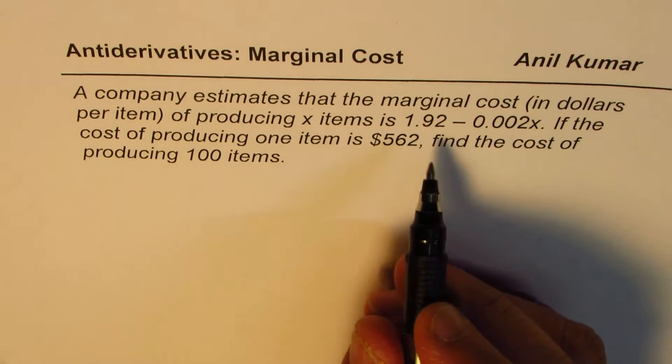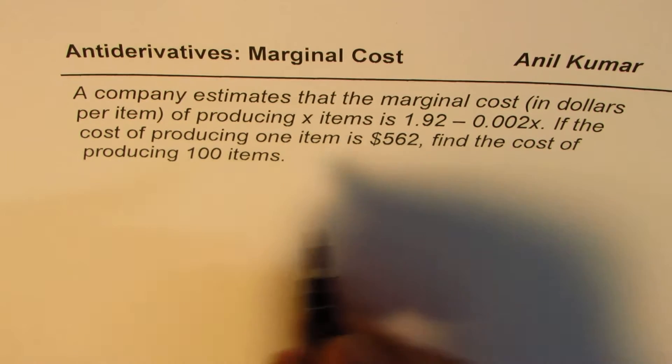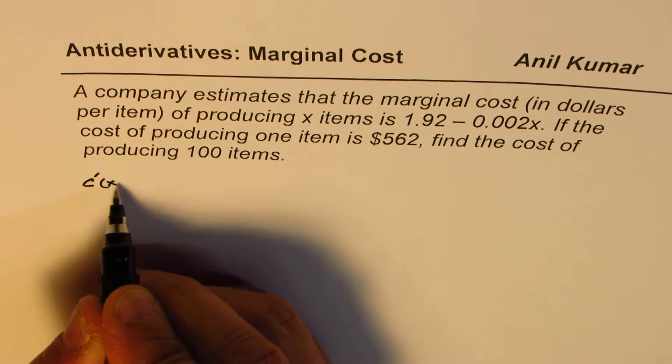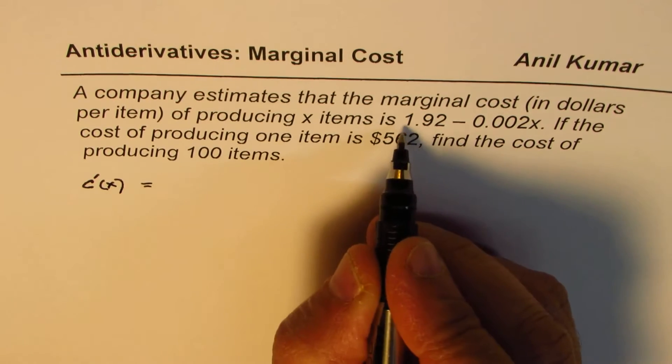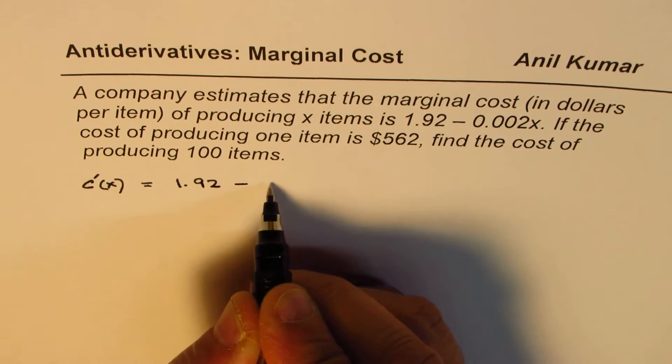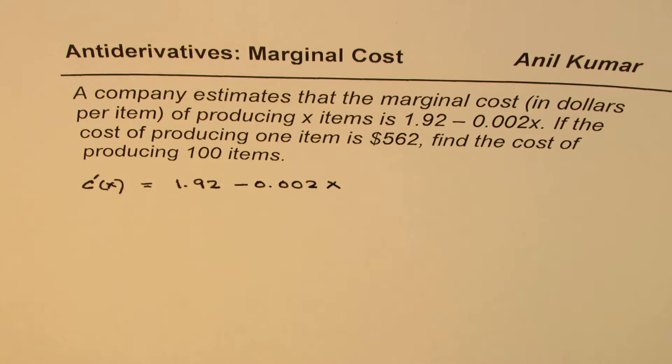Marginal cost is the rate of change of cost with respect to the number of items produced, which we can write as C'(x) equals the given function, 1.92 minus 0.002x. That's the marginal cost.